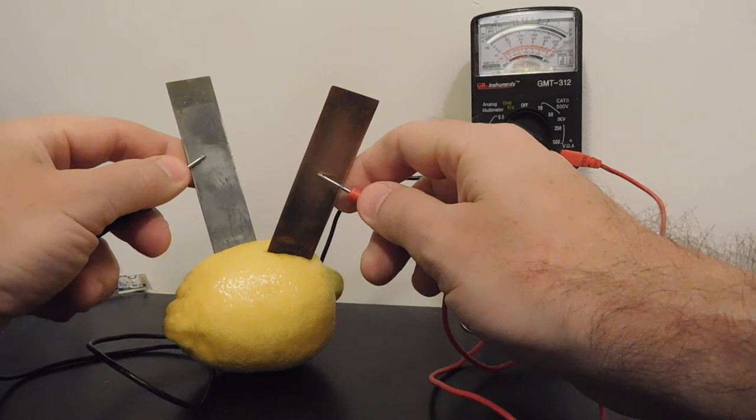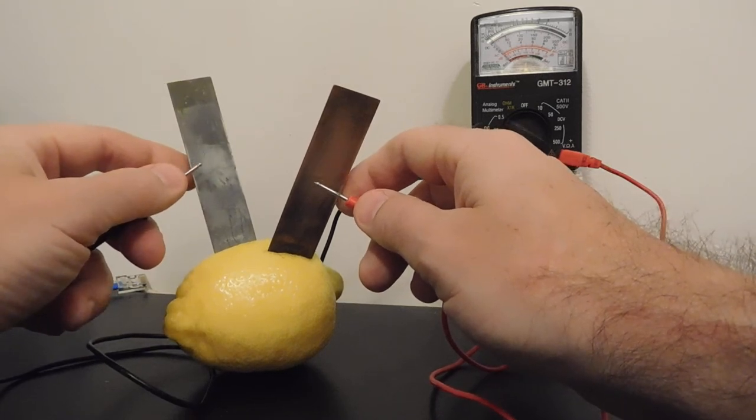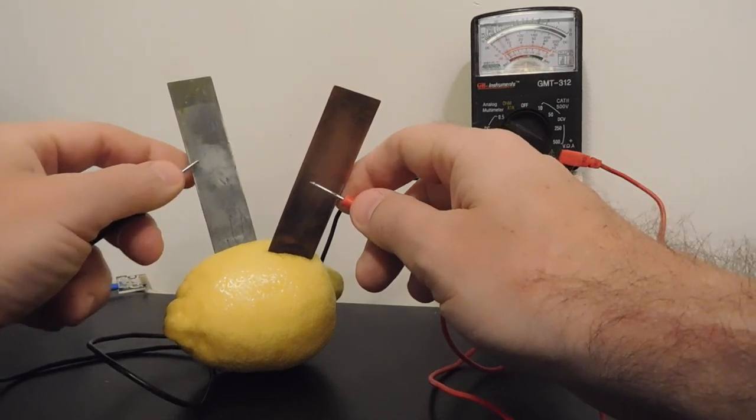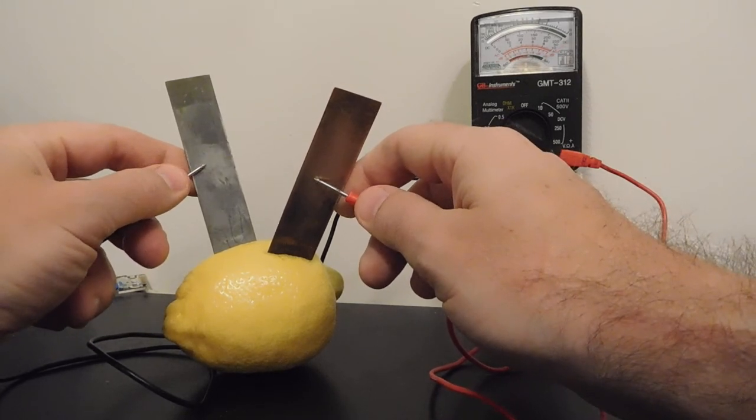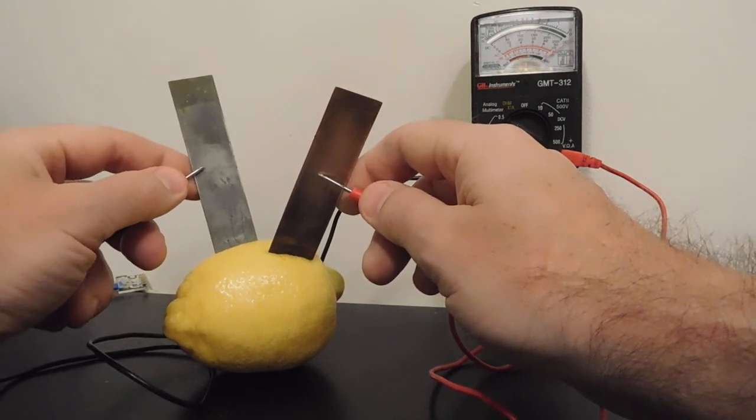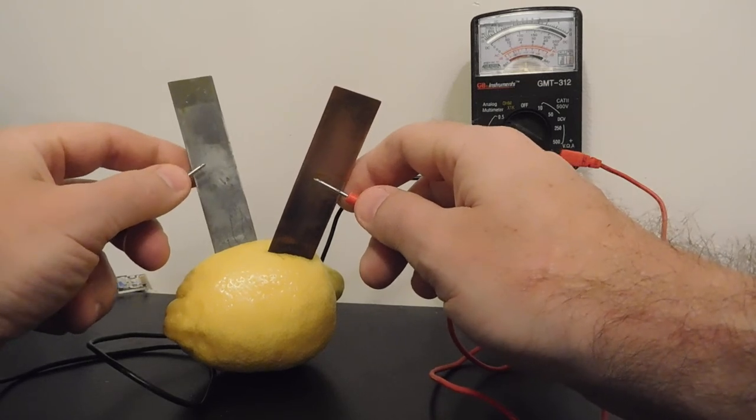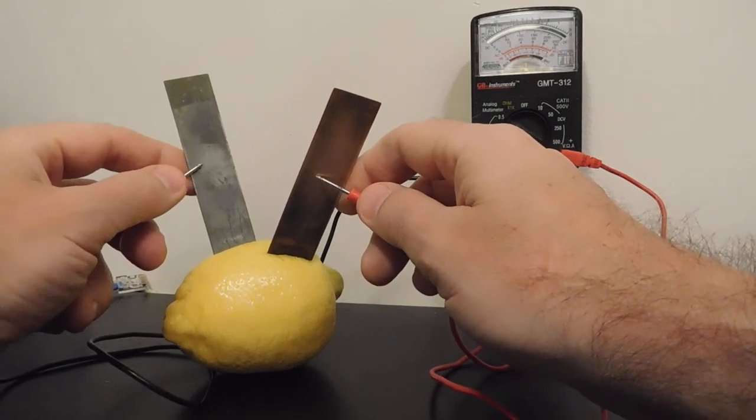One metal is being reduced. One metal is being oxidized. We are making electrons flow. One thing is losing electrons. One thing is gaining electrons. That's making electrons flow through the wire. And the multimeter is detecting that flow of electrons. It's electricity. It's a battery.